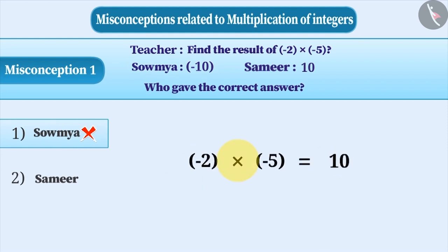Correct understanding is that the product of any two negative integers is always a positive integer. Therefore, while multiplying two negative integers, first we will multiply the numerical value of both the integers and then plus sign is added to the result.